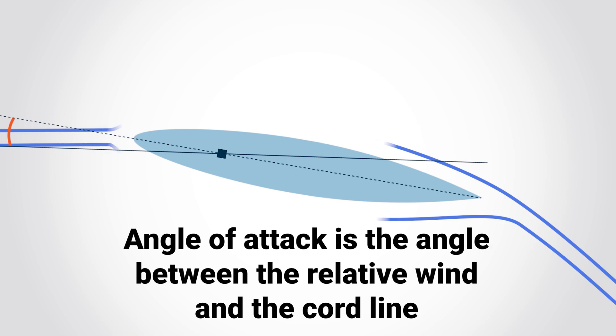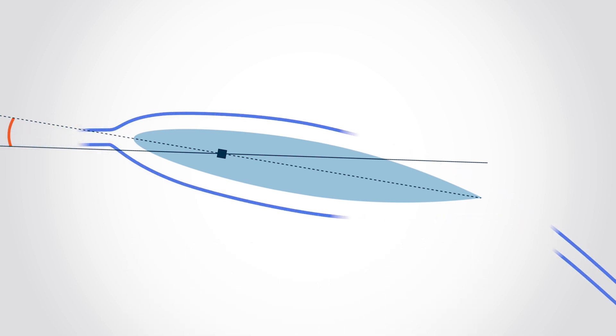Angle of attack is measured by the angle between the relative wind and the cord line. The higher the angle of attack up to a point called the critical angle, the more lift we're able to produce.